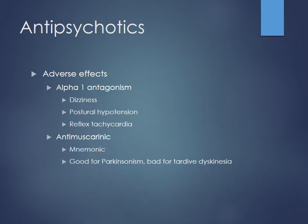High-potency D2 blockers are more likely to cause dystonias and NMS. Low-potency agents also have more alpha-1 antagonism, causing dizziness and postural hypotension — especially in elderly patients with limited physiologic reserve. They also have anti-muscarinic effects: remember the mnemonic — mad as a hatter, blind as a bat, dry as a bone, hot as a hare, heart runs alone. So dry mouth, urinary retention, tachycardia, and sedation are all possible with anticholinergic effects.